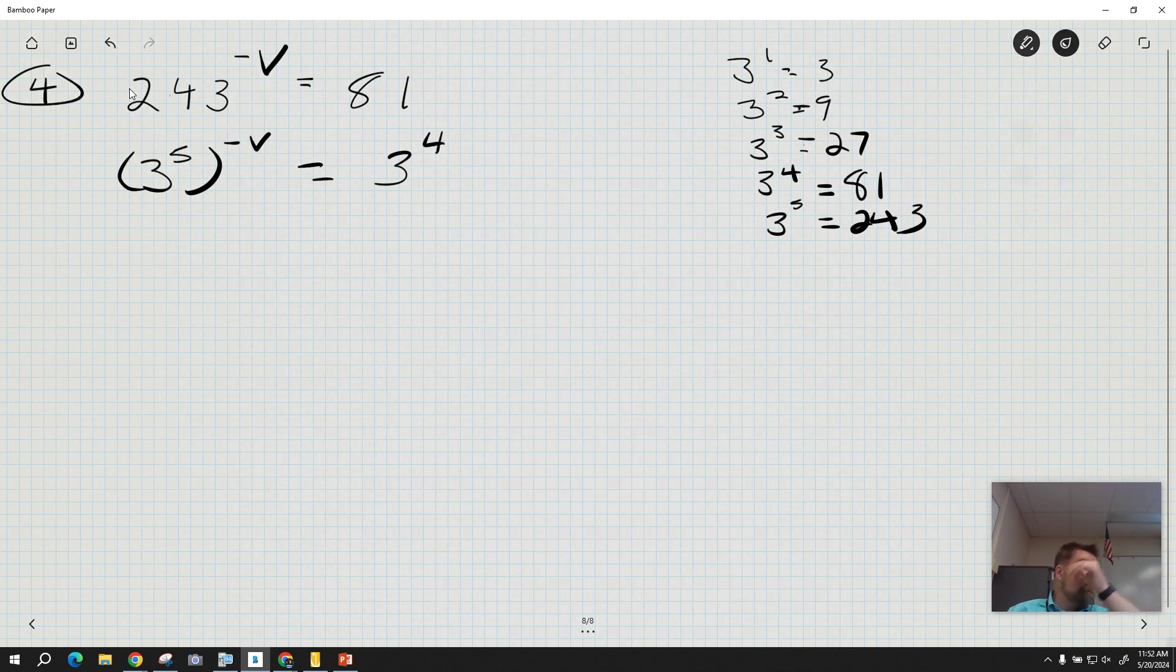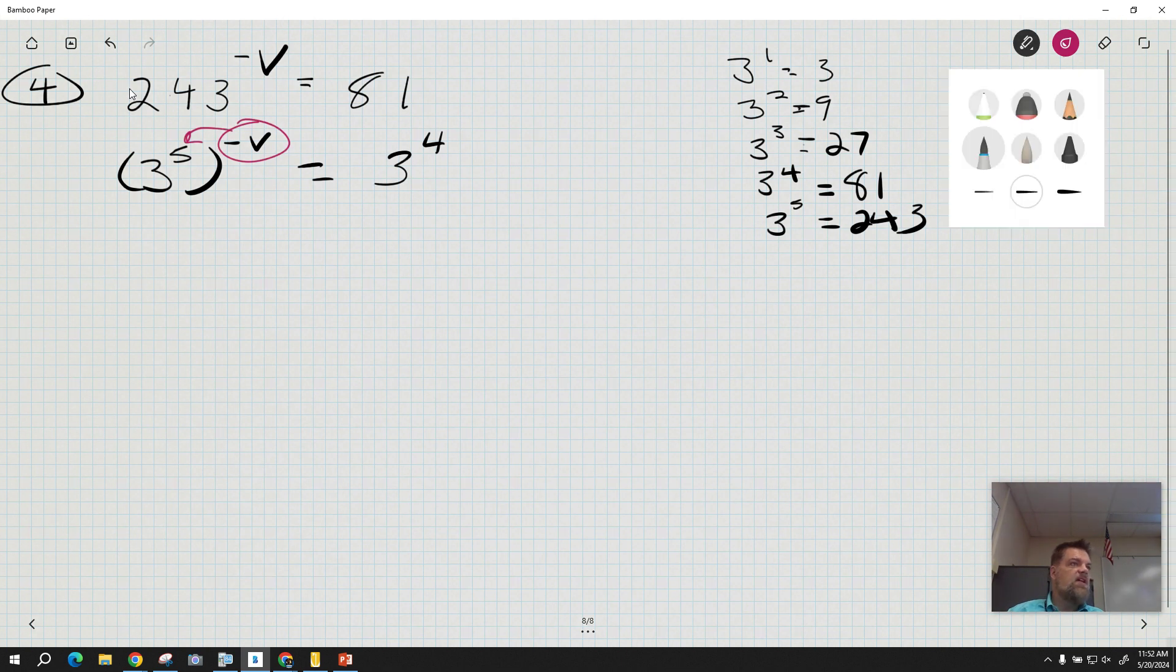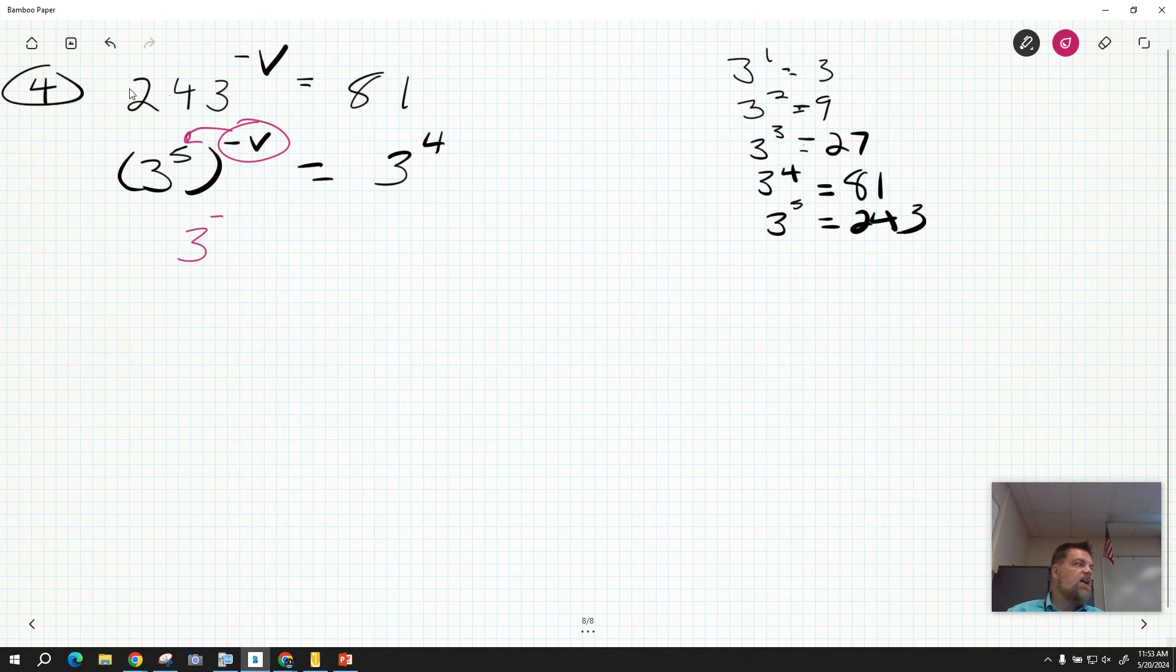Remember our properties of exponents. I'm going to take negative v and multiply it by 5. So that means this whole thing becomes 3 to the negative 5v is equal to 3 to the 4.